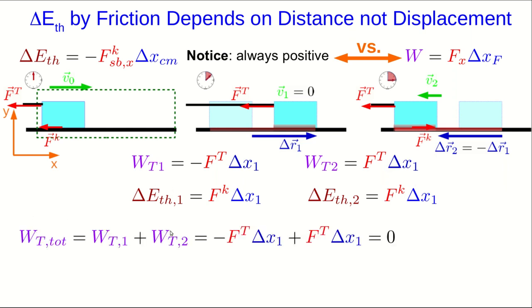The work totals up to zero, because we have two contributions that are exactly equal in size, but one is positive and one is negative. And notice we could have just taken the tension x component times the total displacement, as the equation says, and we would have got the right answer since the total displacement is zero.